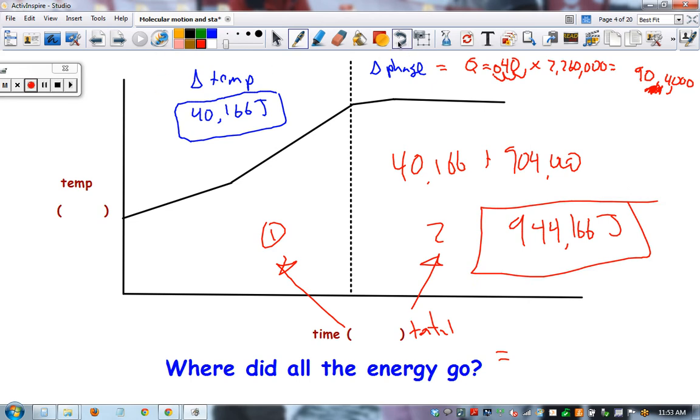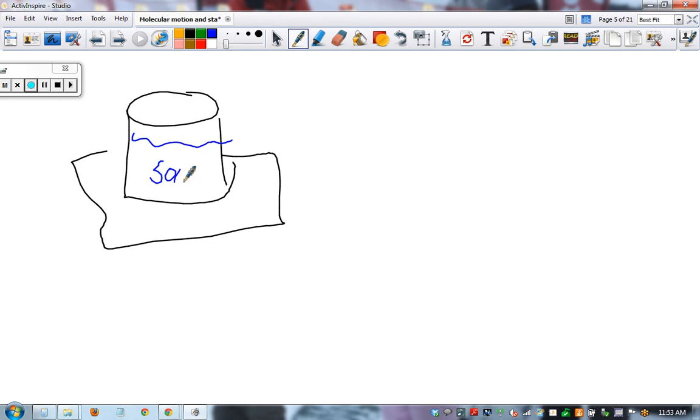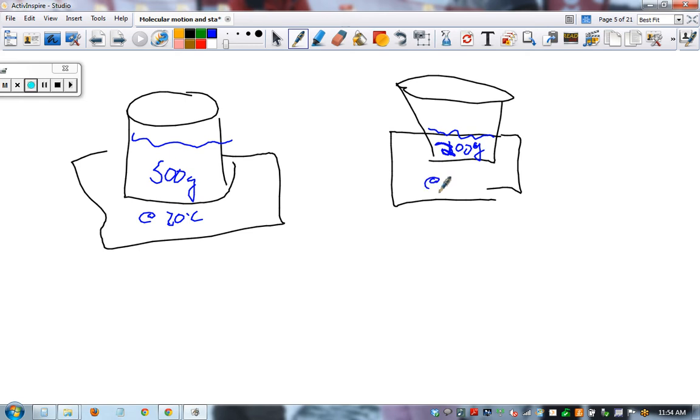Here's one more example, just for practice. We take a container sitting on a hot plate. It has 500 grams of water at 20 degrees Celsius. We heat it up and boil it until there's only 100 grams left at 100 degrees Celsius. Total energy consumed.